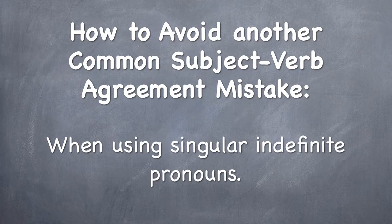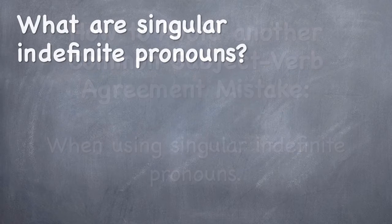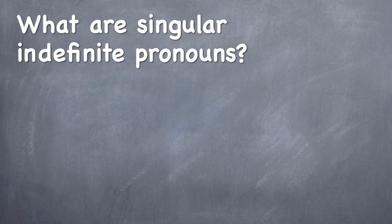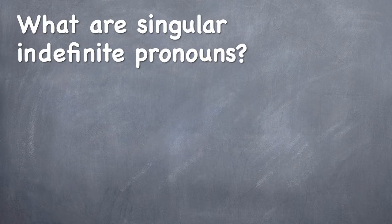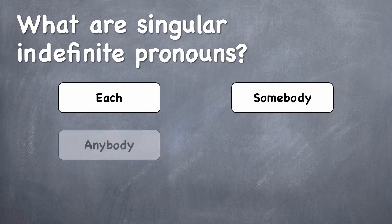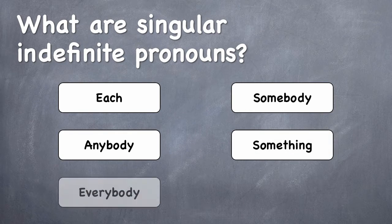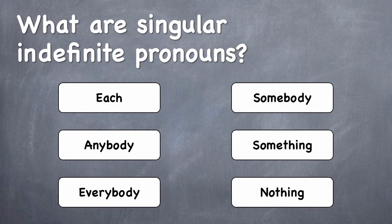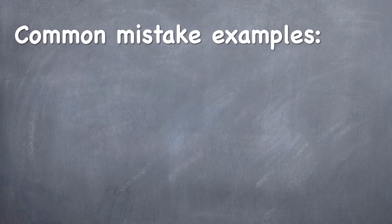They use the verb of the wrong number in sentences with singular indefinite pronouns. And what are singular indefinite pronouns? Here are a few examples. These are words such as each, somebody, anybody, something, everybody, or nothing. And now let me give you a couple of examples of mistakes people make.